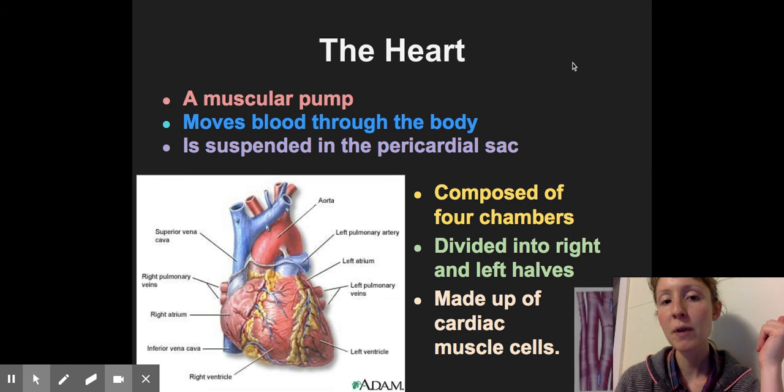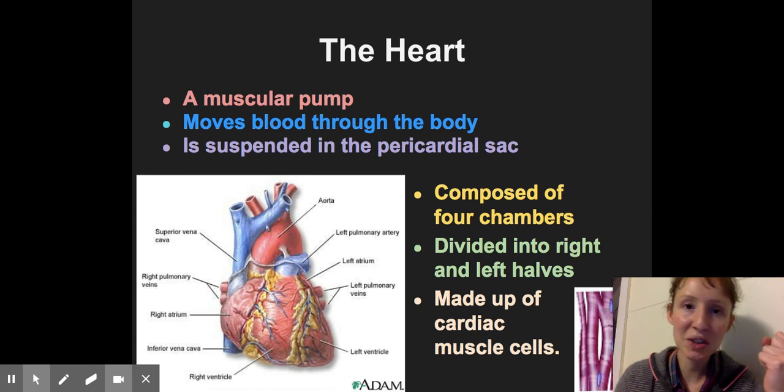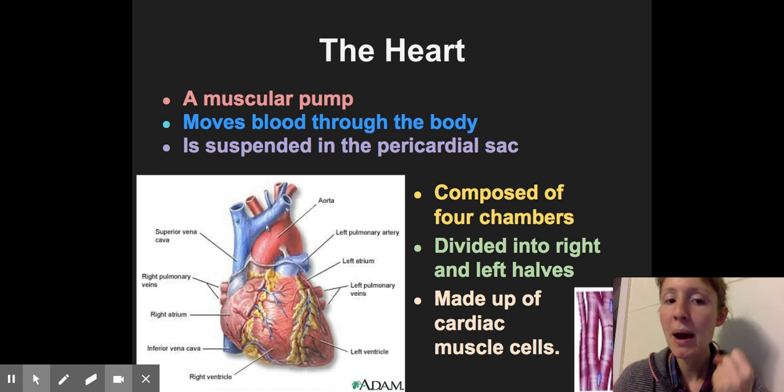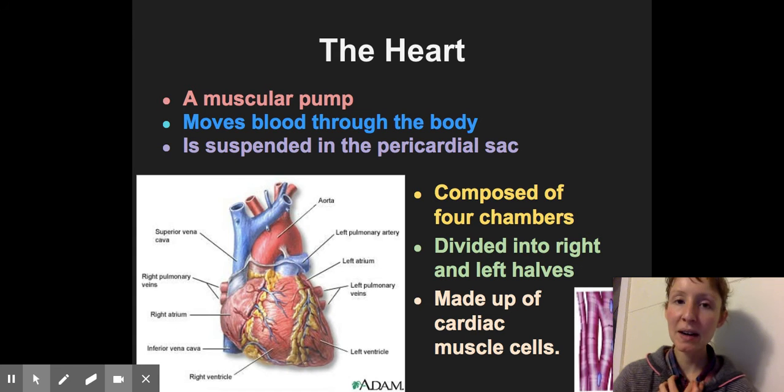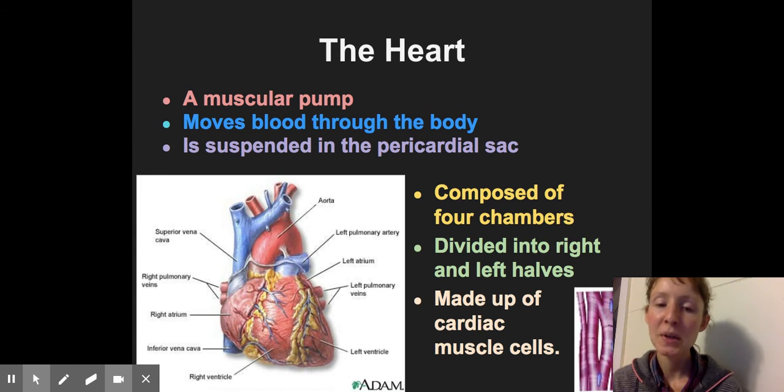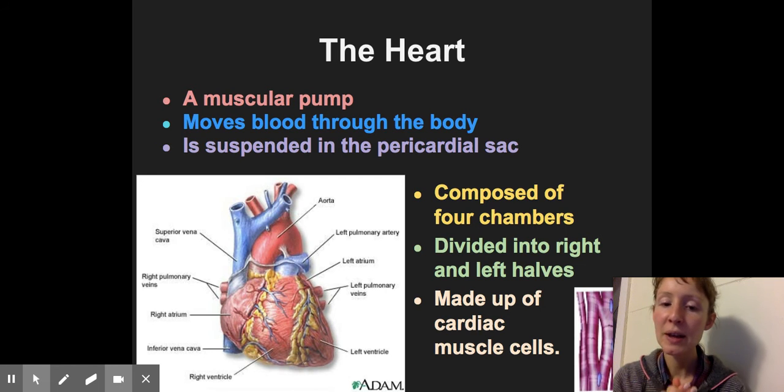Moving forward, let's look at the heart. So the heart is the muscular pump that moves blood throughout the body. It's about the size of your fist, weighs just like one pound, but it is a powerful organ. It is located in the thoracic cavity suspended in the pericardial sac. It is composed of four main chambers that we will look at specifically. And you can separate those chambers into the left and right halves. And the whole thing is powered by cardiac muscle cells.